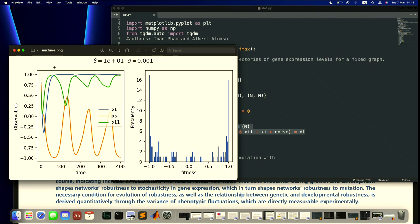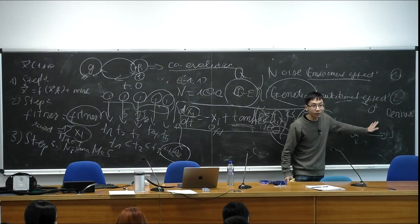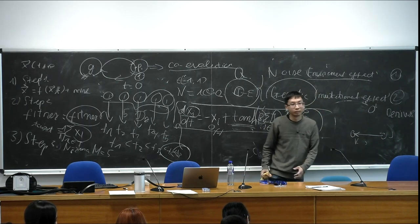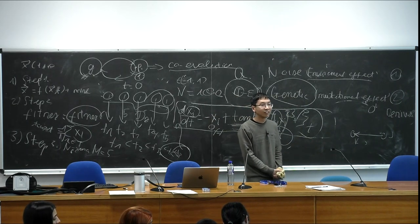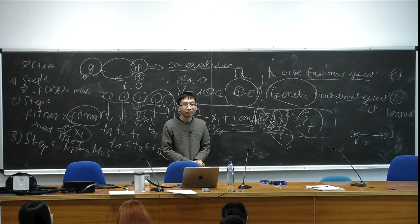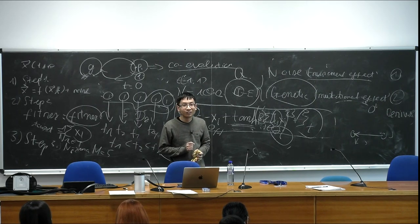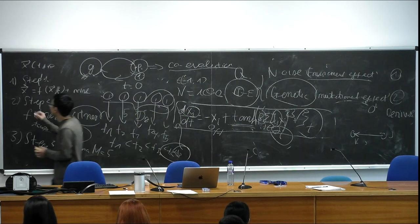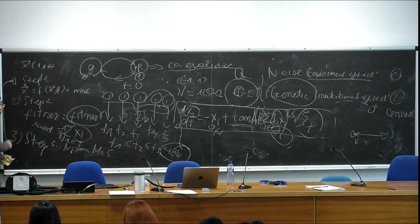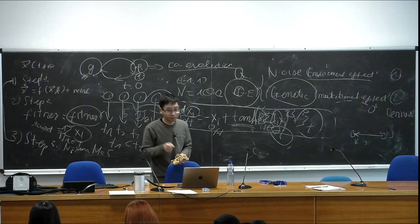Confirmation: the rewiring process is random — pick a pair of nodes at random, remove the interaction between them, then randomly choose another pair and create a link between them. Only one connection is changed per generation. The overall cycle is: step one (simulate ODE), step two (compute fitness), step three (select and mutate), then repeat many times.